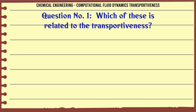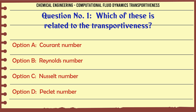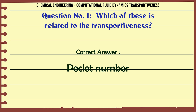Which of these is related to transportiveness? A. Courant number. B. Reynolds number. C. Nusselt number. D. Peclet number. The correct answer is Peclet number.